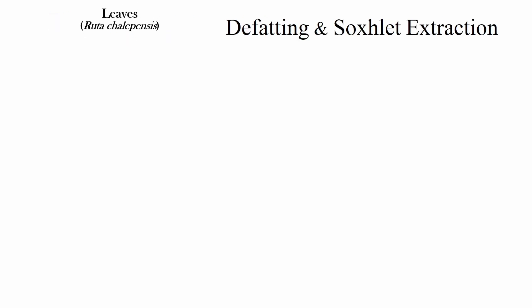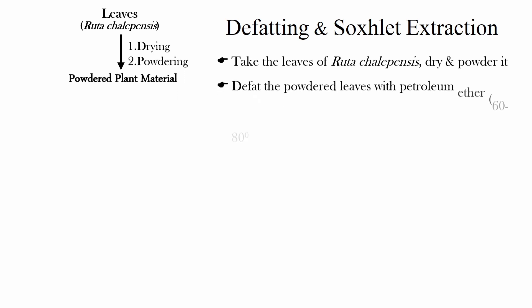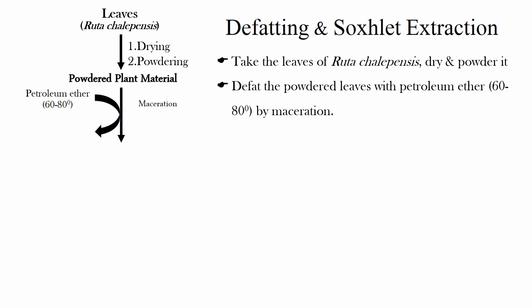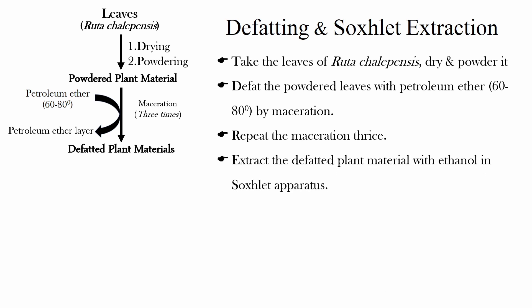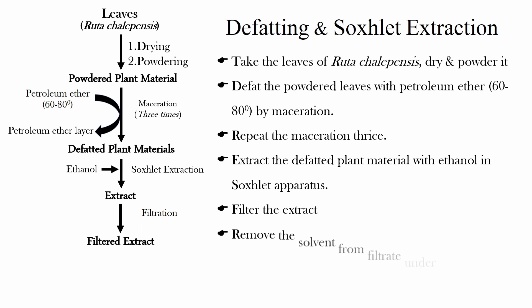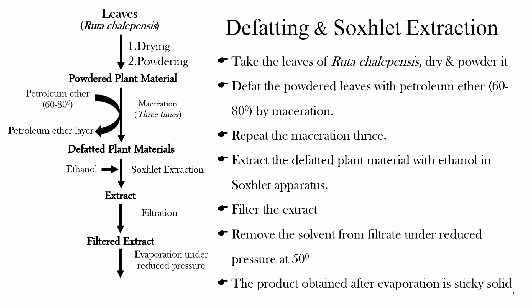Defatting and Soxhlet extraction: Take the leaves of Ruta chalepensis, dry and powder them. Defat the powdered leaf with petroleum ether of boiling point 60 to 80 degrees centigrade by maceration. Repeat the maceration process three times to obtain defatted plant material. Extract the defatted plant material with ethanol in a Soxhlet apparatus. Filter the extract. Remove the solvent from the filtrate under reduced pressure at 50 degrees centigrade. The product obtained after evaporation is a sticky solid.